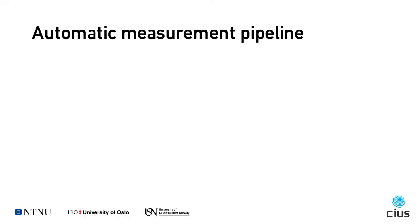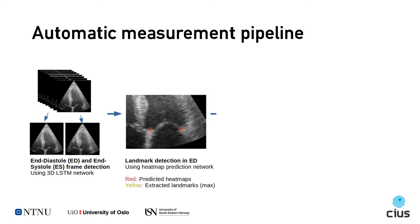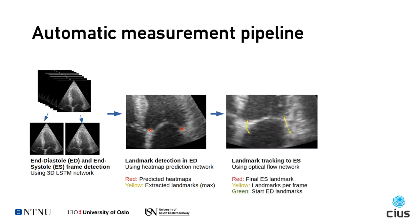Our proposed automatic measurement pipeline involves three different neural networks. First, we use a 3D LSTM network to predict which frames belong to the end-diastole and end-systole of the cardiac cycle. Then, we use a heatmap prediction network to detect the annulus landmarks in end-diastole. Finally, these landmarks are tracked to the end-systole frame using an optical flow tracking network. MAPSE can then be calculated as the distance between the landmarks in end-diastole and end-systole.